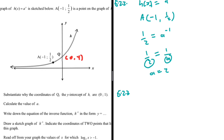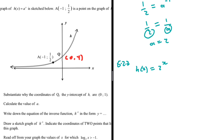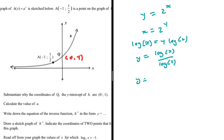For 5.2.3, find the equation of the inverse function h⁻¹ in the form y = ... Since h(x) = 2ˣ, we write y = 2ˣ, then swap x and y to get x = 2^y. Introducing log on both sides: log x = y·log 2, so y = log x / log 2, which gives us y = log₂(x). That is the inverse function.